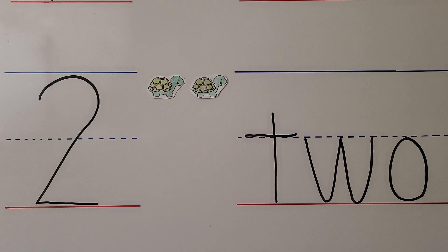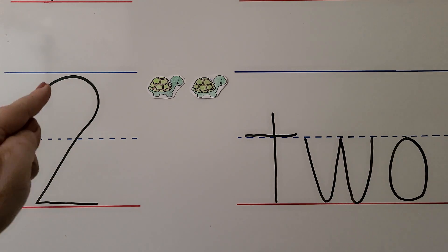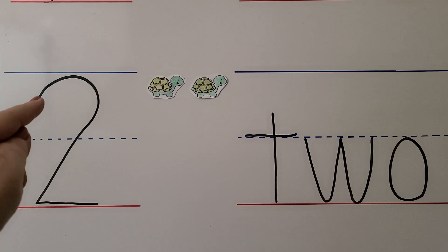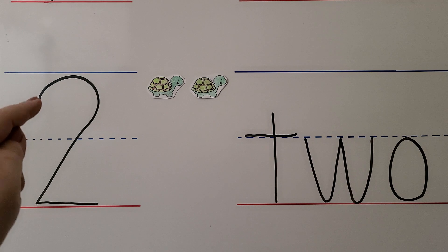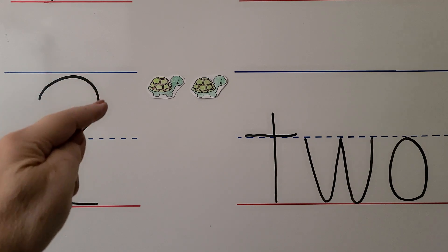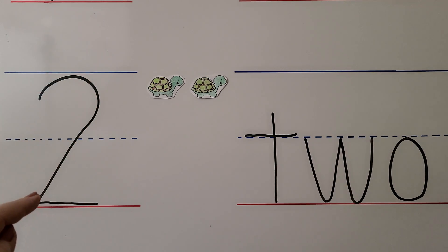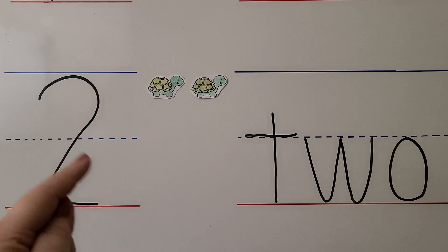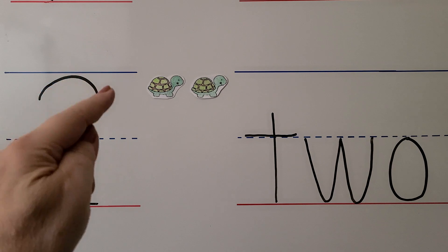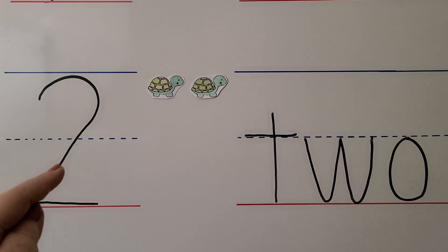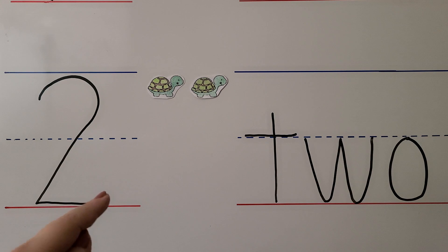For left-handed students, we do it the same way. We start at the top right here — not up on the line, about right here. We come around and curve on a slant, come down to the line, and go across. We come around, curve, and then on a slant come down and go off to the side.